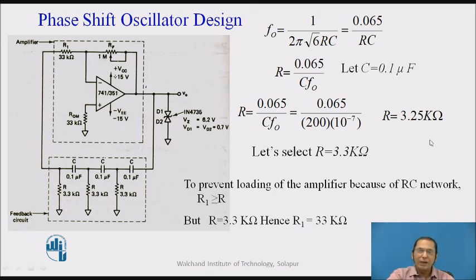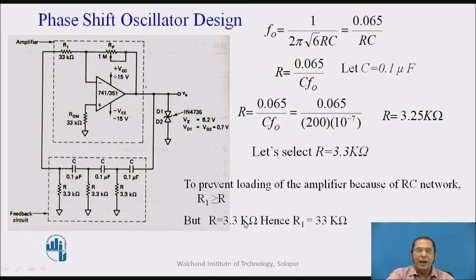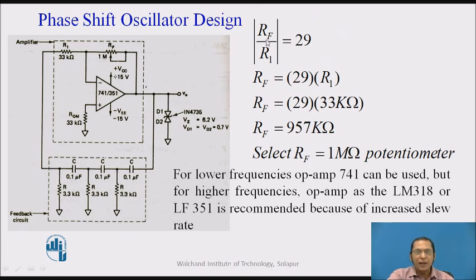Since 3.25 kΩ is not a standard value, we can use a resistor of 3.3 kΩ. To prevent loading of the amplifier by the RC network, R1 should be greater than R; we typically assume R1 = 10 × R. With R = 3.3 kΩ, R1 = 33 kΩ. For sustained oscillation, the gain must equal 29, so for the inverting amplifier, Rf = 29 × R1. With R1 = 33 kΩ, Rf must equal 957 kΩ, so we can use a 1 MΩ potentiometer.